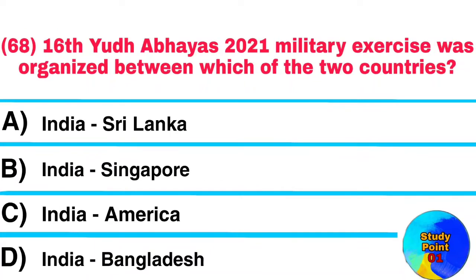Question No. 68. The 16th Yuddh Abhyas 2021 military exercise was organized between which two countries? Answer: India and America.